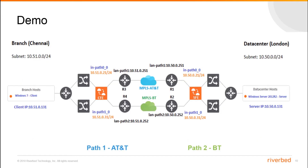That was too much of theory — no more theory, let's begin our demo. This is the network setup we are going to use: configuring secure transport between a branch steelhead and the data center steelhead. We have two paths between these sites: Path 1 is MPLS AT&T and Path 2 is MPLS BT. There is a Windows client on the branch side and a Windows server on the data center side for testing. For this demo we are going to secure the path MPLS BT between these two sites.